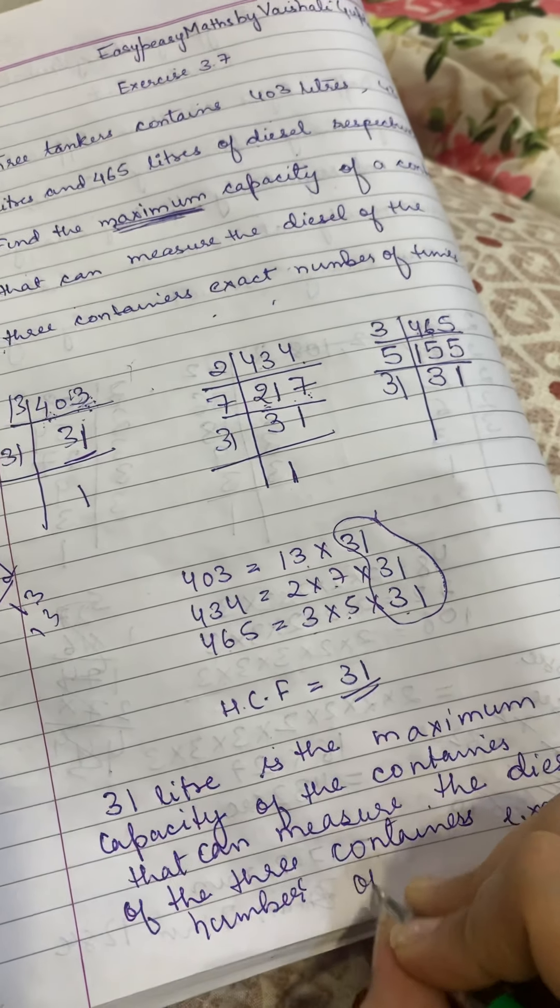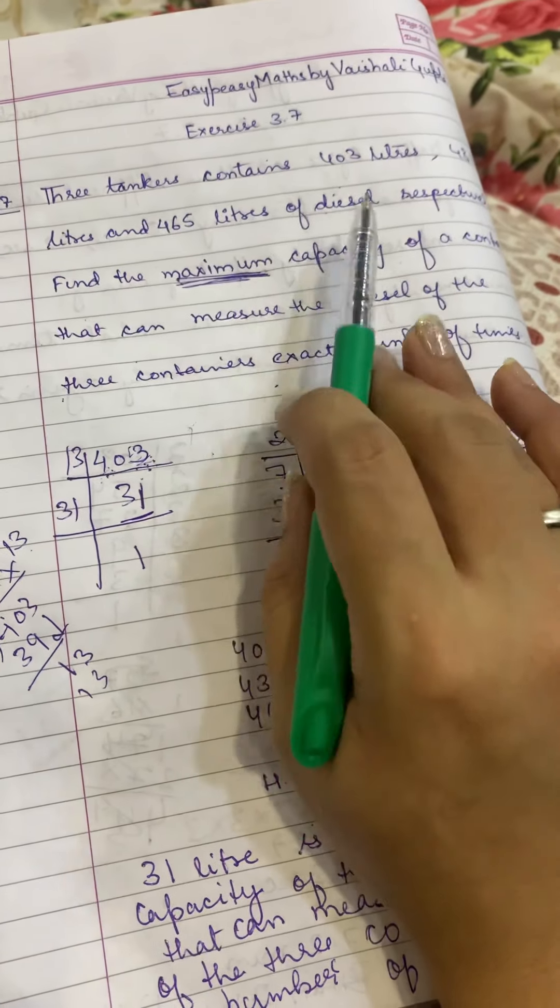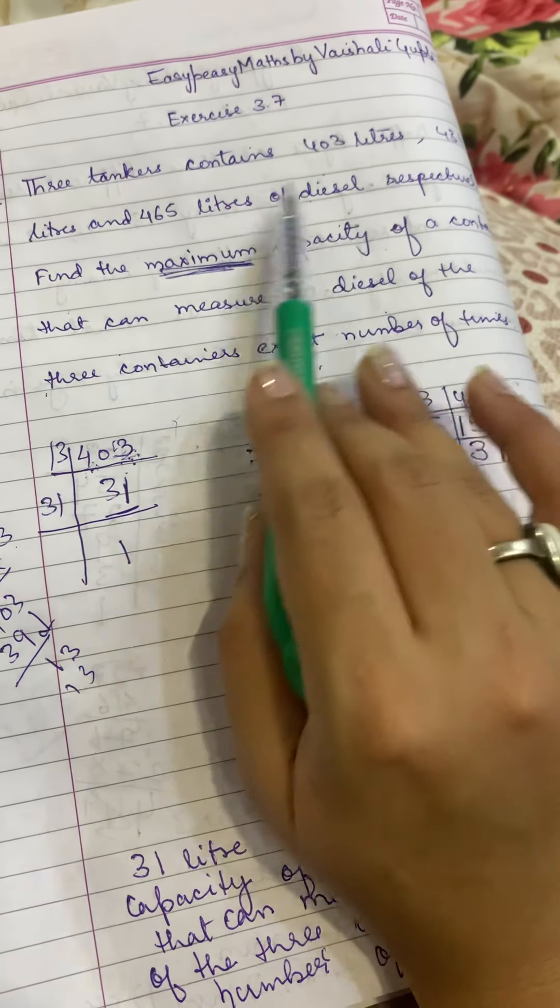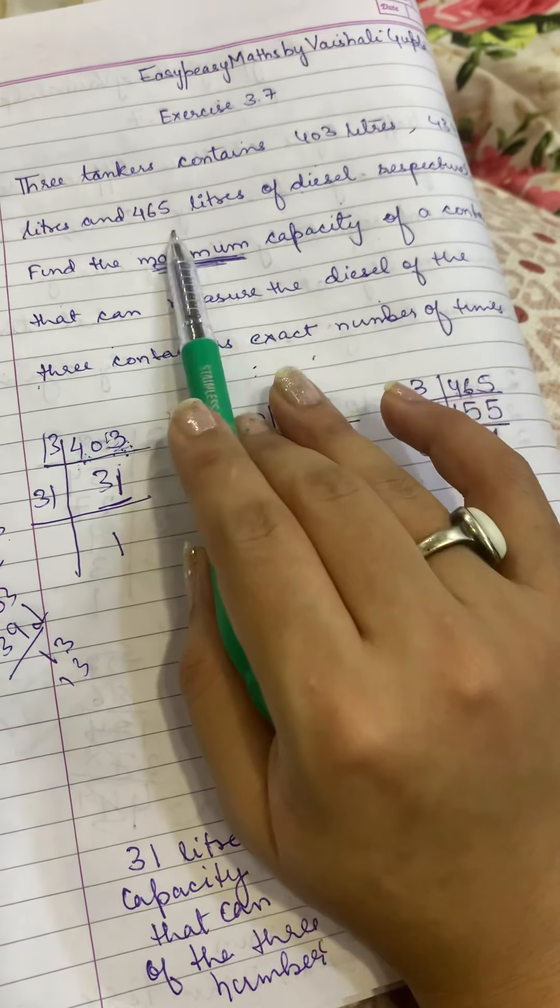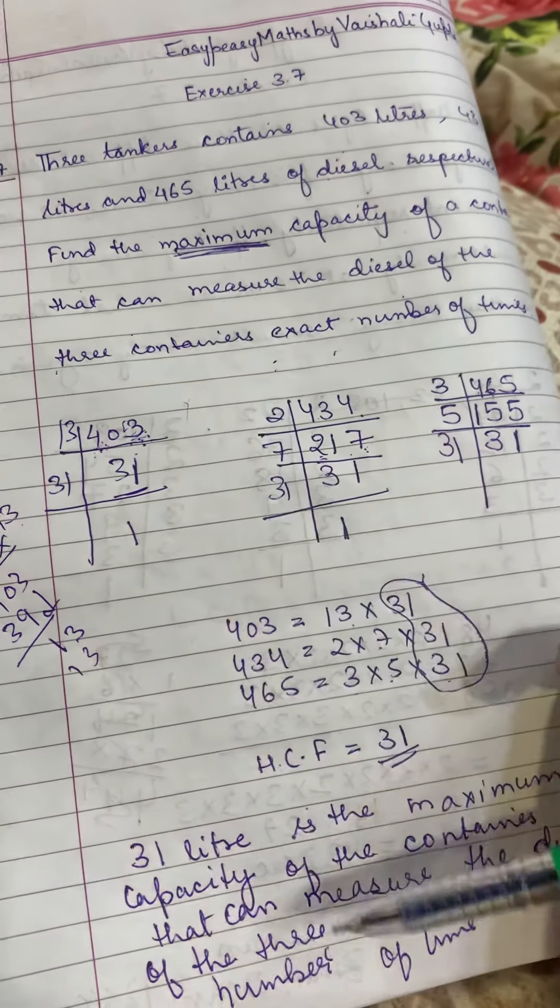You have to understand why we took HCF. First of all, because this is the exact number of times, it is measuring the exact number of times, so it will be 100% of these three. And because we have to take maximum, that's why we have to take the highest common factor.